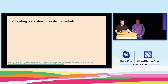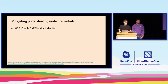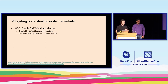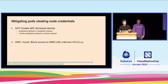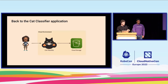How do we mitigate pods stealing node credentials? In GCP, it's simple: just enable GKE workload identity. It's the default for autopilot and will soon be default for all new GKE clusters. For Azure and AWS, it's more complex — you have to explicitly block network access to the instance metadata service.